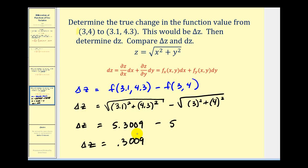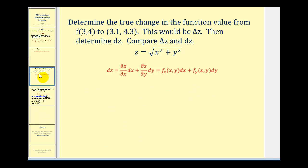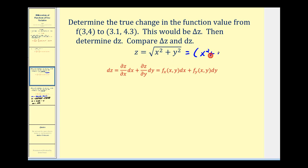Now we're going to calculate differential z and compare it to delta z. To determine differential z, we need the partial derivatives of the function with respect to x and with respect to y. Before we do that, I'm going to rewrite the function as the quantity x squared plus y squared raised to the one-half power.